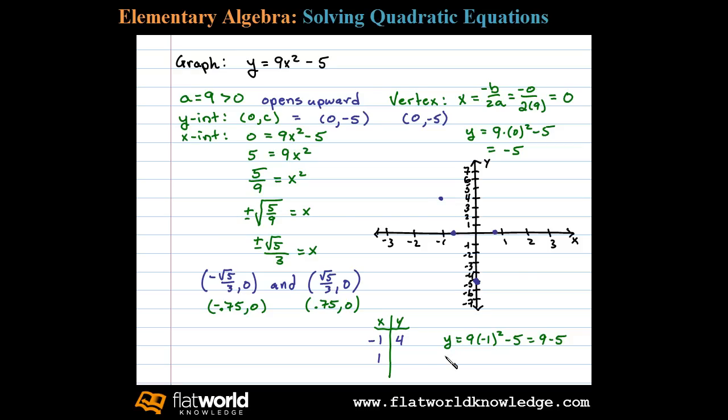Let's substitute 1 in. Y equals 9 times 1 squared minus 5. Well that's going to be the same. We have 9 minus 5 again. The corresponding y value is 4. So that tells me 1 comma 4 is a point on the graph. And we can really see the shape of the graph here. The parabola opening up. I'll sketch that in now.